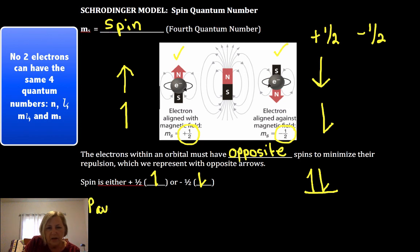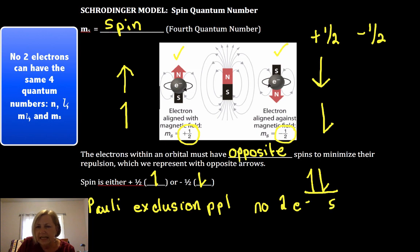And Pauli called this ultimately the Pauli exclusion principle and what he said is that no two electrons can have the same four quantum numbers.